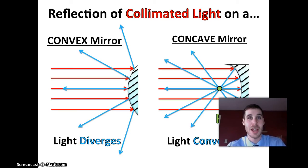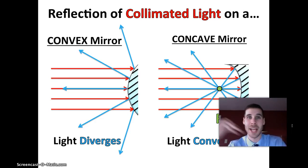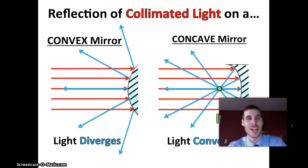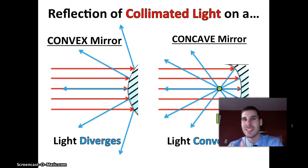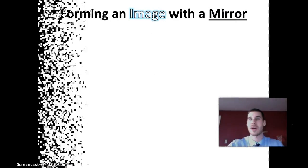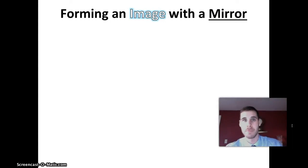There's a lot of stuff on mirrors, but we're not done — because when you look at yourself in a mirror, you're not seeing parallel beams of light, you're seeing an object, an image. The way an image is formed from an object is a little more fascinating than what we just covered. This is what will happen if you shine a flashlight at one of these mirrors, but what we'll actually look at now is what happens when you look at any object in a mirror. We'll talk about how to form an image with a mirror.